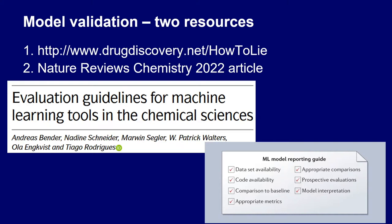There are two resources I would like to point out for those training models on chemical data. The first is a blog post on how to lie with machine learning models in drug discovery — it's really about realistically evaluating models. The other is a Nature Chemistry article we published two months ago, addressing reproducibility and better practices for machine learning in our area.